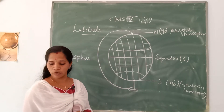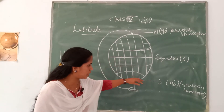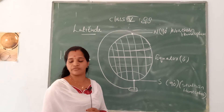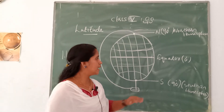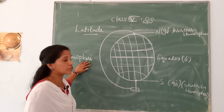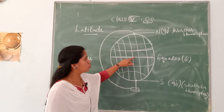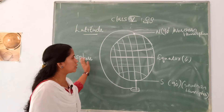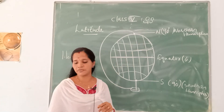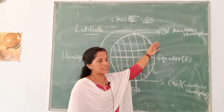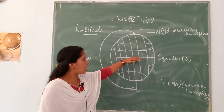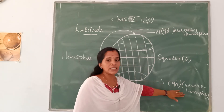Half to the south of the equator is called a certain hemisphere. What is hemisphere? Hemisphere means the equator divides the earth into two halves, and each half is called a hemisphere. There is the northern hemisphere and the southern hemisphere. Half of the north of the equator is called the northern hemisphere, and half of the south of the equator is called the southern hemisphere.